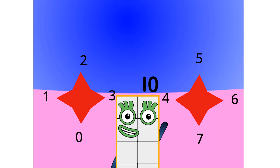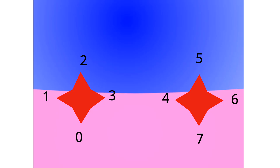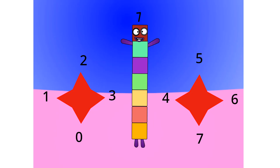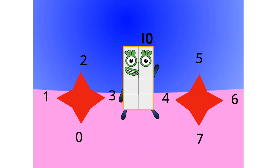Oh wow. Looks like I am no longer octoblock, but I am still called 8. So yeah, this base has 8 digits: 0, 1, 2, 3, 4, 5, 6, and 7. Let's count in octal: 1, 2, 3, 4, 5, 6, 7, 8.